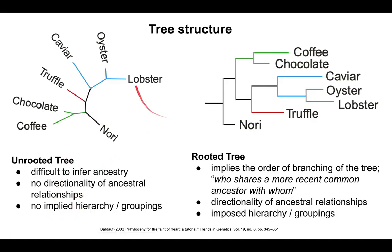If you pick a root — in this case 'Nori' was chosen as the root — now we have a directionality. We know this is the root of the tree, and this is likely the outgroup, often the most ancient or oldest taxa relative to everything else in the tree. Now you can start mapping features onto the tree and track changes over time, as well as the clustering or imposed hierarchy of these things.